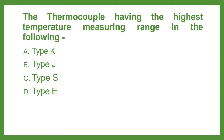Which thermocouple type uses platinum and rhodium? Option A Type K, Option B Type J, Option C Type S, or Option D Type E. The answer is Option C: Type S.